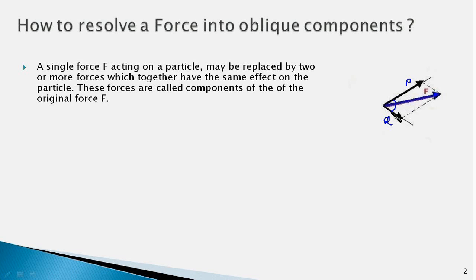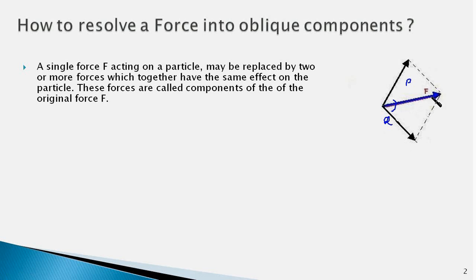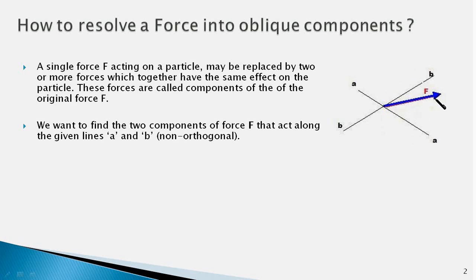In this video we'll restrict our discussion to only oblique components. Suppose we want to resolve the force F into two components which have different directions — we can construct another parallelogram in which the two sides are along the desired directions and the diagonal is still the force vector F. The magnitude of these components changes because their directions have changed. Likewise, we can construct several parallelograms, giving different components of different magnitudes along different directions — in other words, we can have an infinite number of sets of components of force F.